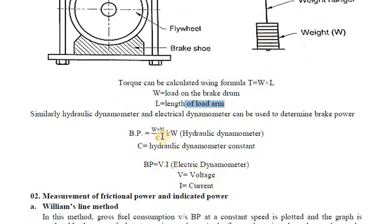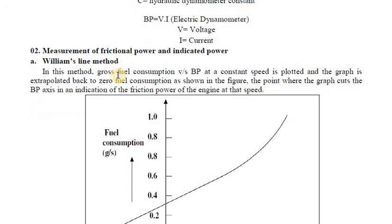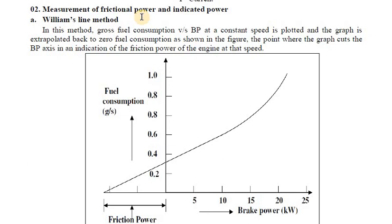Similarly, hydraulic dynamometers and electric dynamometers can also be used to determine brake power. These are the two main methods — rope brake dynamometer and Prony brake dynamometer — used to measure brake power. Now we move on to how to measure friction power and indicated power, which are also very important. As mentioned earlier, IC engines have three types of power: brake power, indicated power, and friction power.